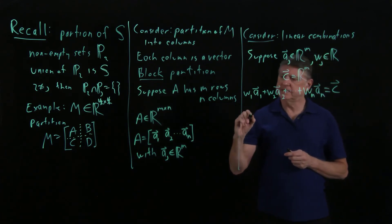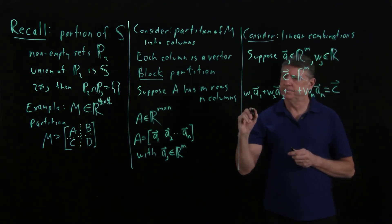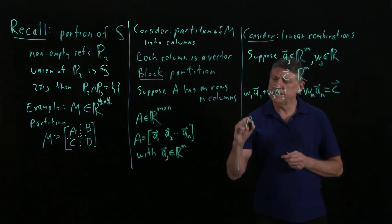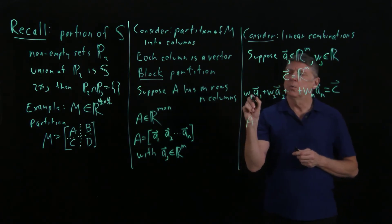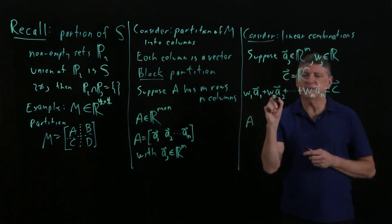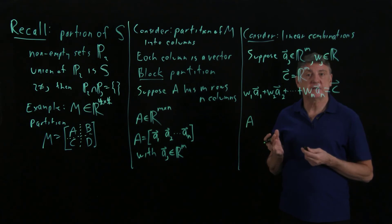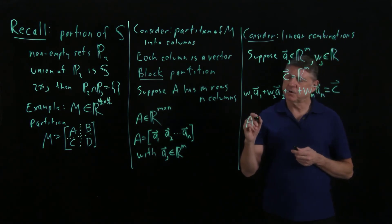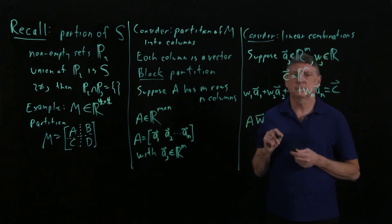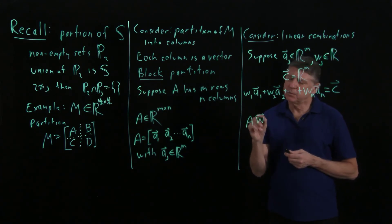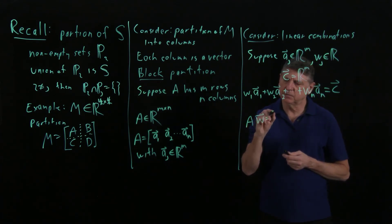However, the way that we'll observe is that now consider what is A and what happens when we gather these w's. One rule that we'll use a lot is see a bunch of numbers, gather them in a vector, see a bunch of vectors, gather them in a matrix. So let's try that. Let's try gathering the vectors w and let's see what happens when we do that.